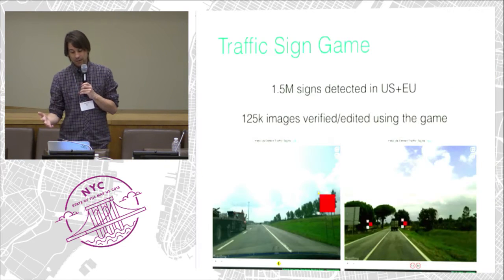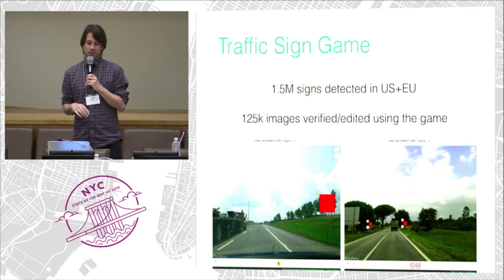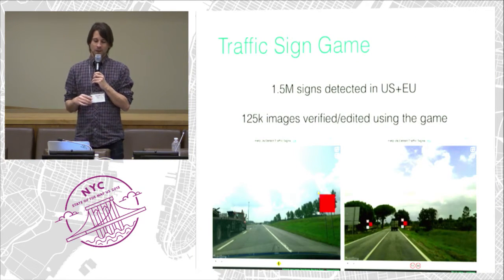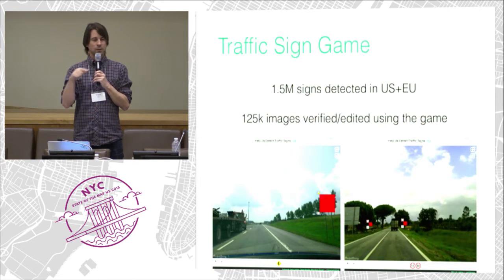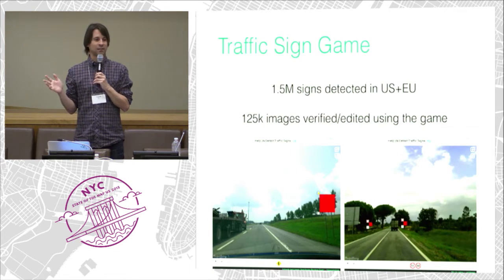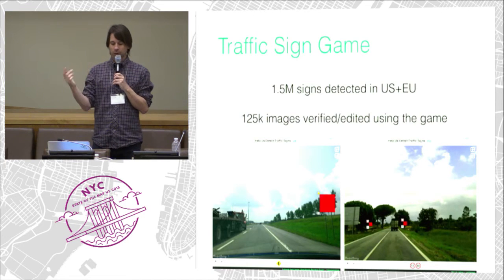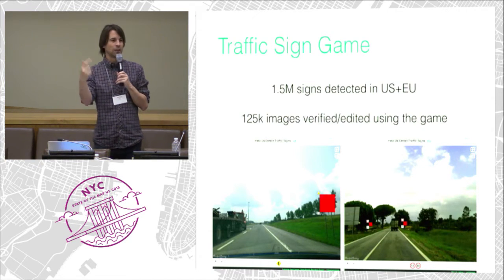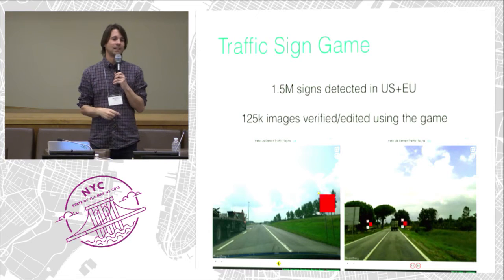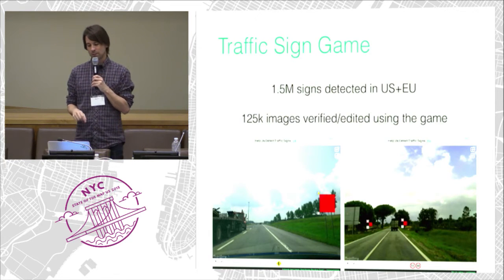Two or three weeks after that, we launched APIs for contributing fixes back, and a traffic sign game — a URL on our site where you get shown random images and then verify or correct them.